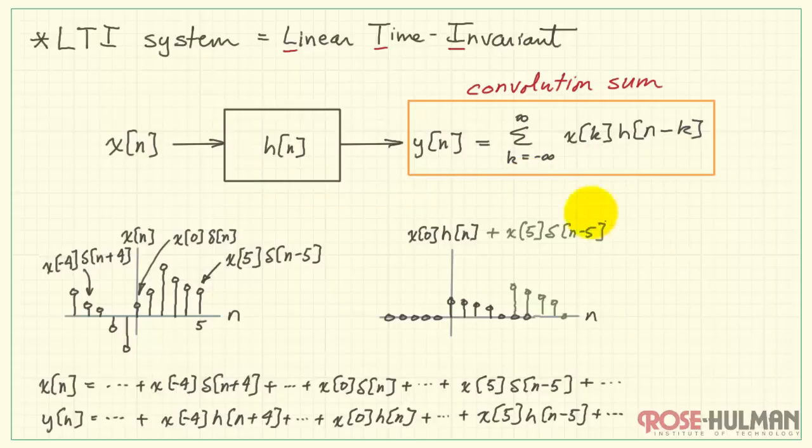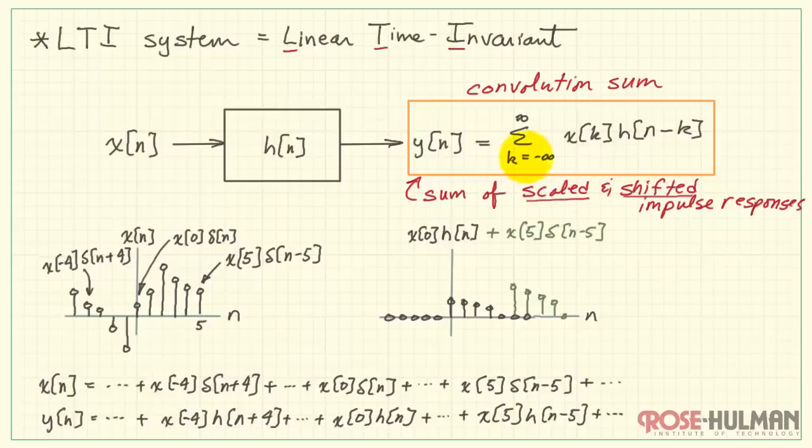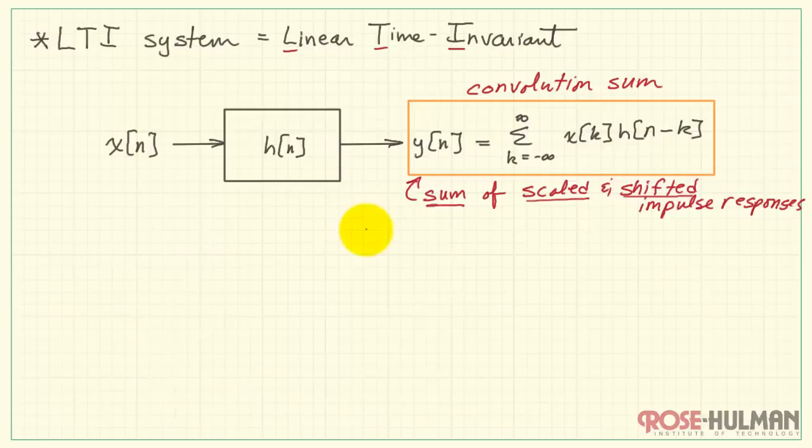And this is the convolution sum. Very important result. It's the sum of scaled and shifted impulse responses. Here's the scaling. And of course here's the sum. Convolution can be abbreviated with this notation. We write y of n equals x of n convolved with h of n. The asterisk is our convolution operator.